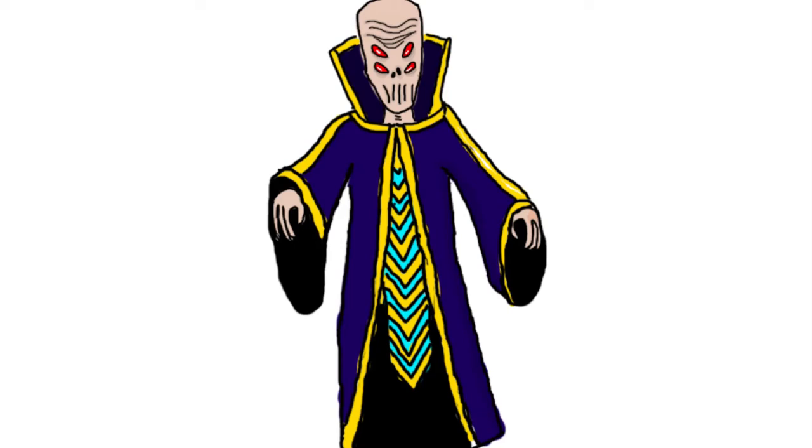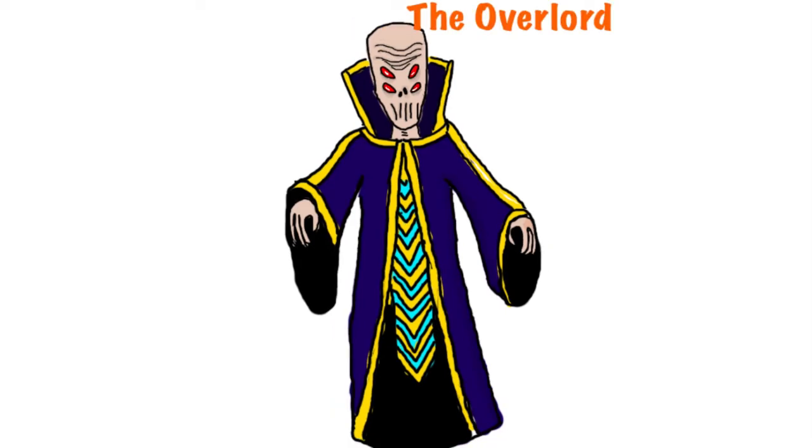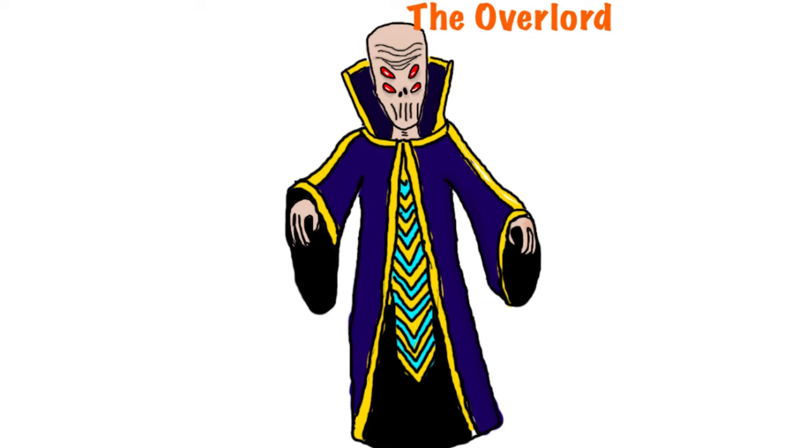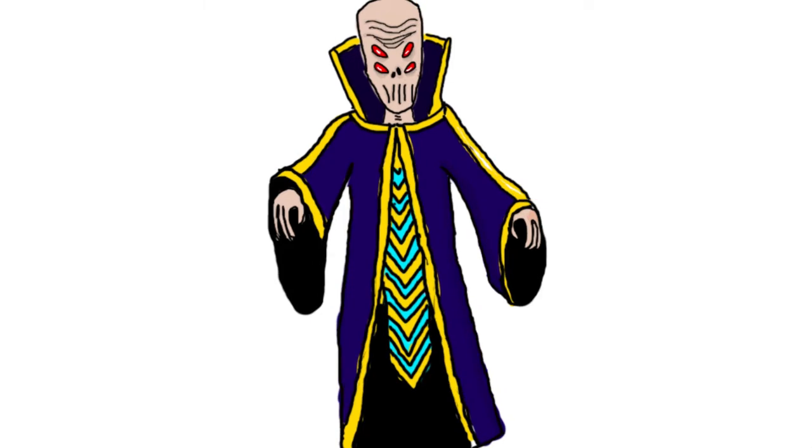So the first idea I have here is called the Overlord. It's an 8-foot-tall alien creature that would probably be around $280. Its eyes light up, it would have no animation, and it mumbles in an alien language. Now you might think this price is a little overpriced for this guy, but mind you, he would be a very large animatronic with a very huge head and very detailed as well.